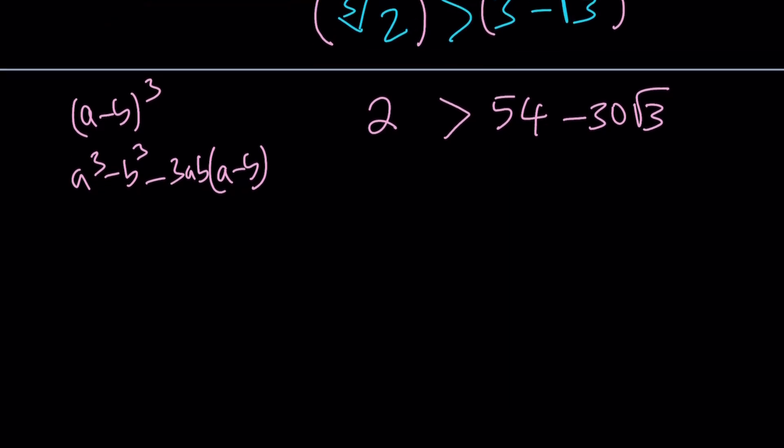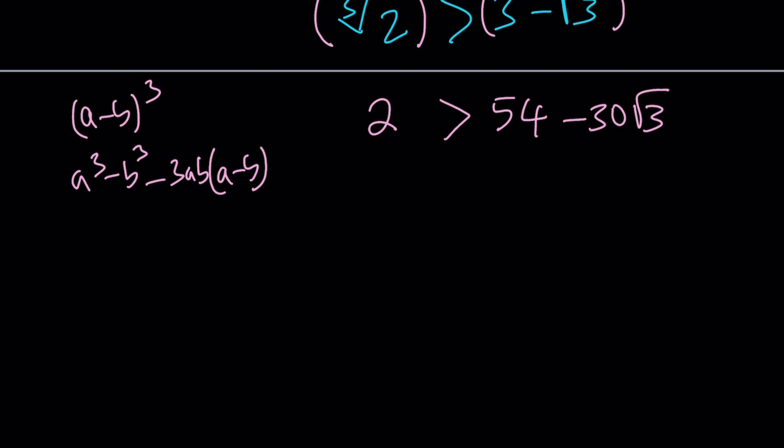And then, I'm going to do the following. Let's go ahead and add 30 cube root, 30 root 3 to both sides. And then subtract 2. So, we're going to get this.